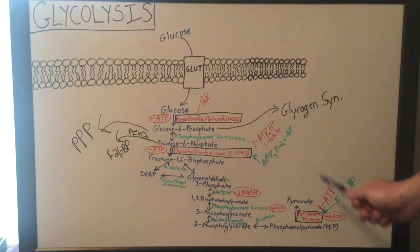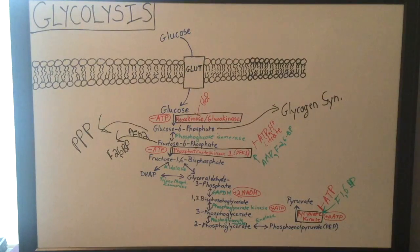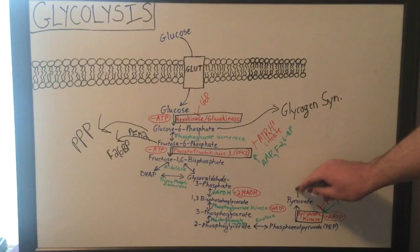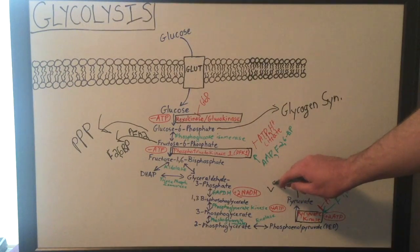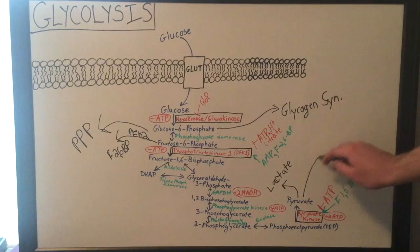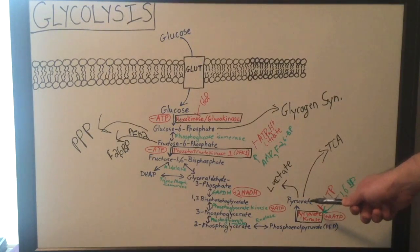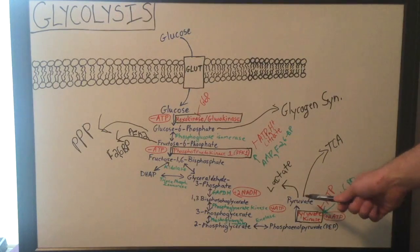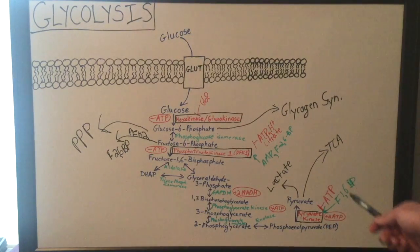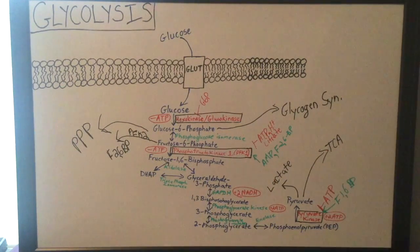Nevertheless, once you get pyruvate, it can actually be converted into a couple different pathways depending on whether oxygen is available to the cell. One of them is lactate production, and the other one is the TCA cycle. So if the cell has oxygen and mitochondria, pyruvate will actually go to the TCA cycle. If there's no mitochondria or no oxygen present, then it'll go into lactate production.